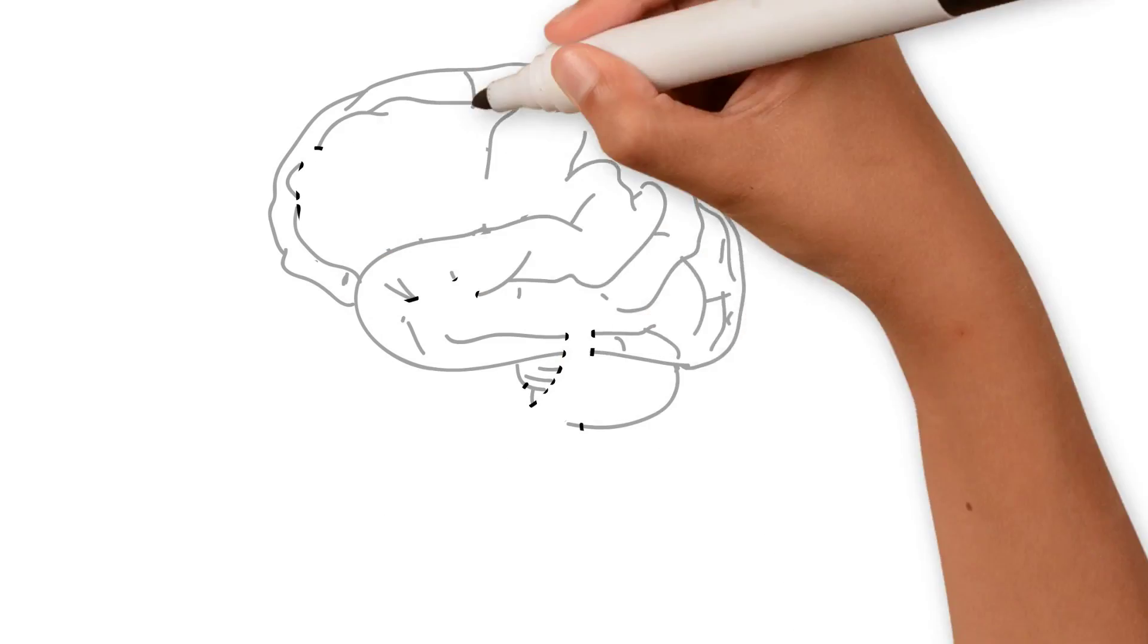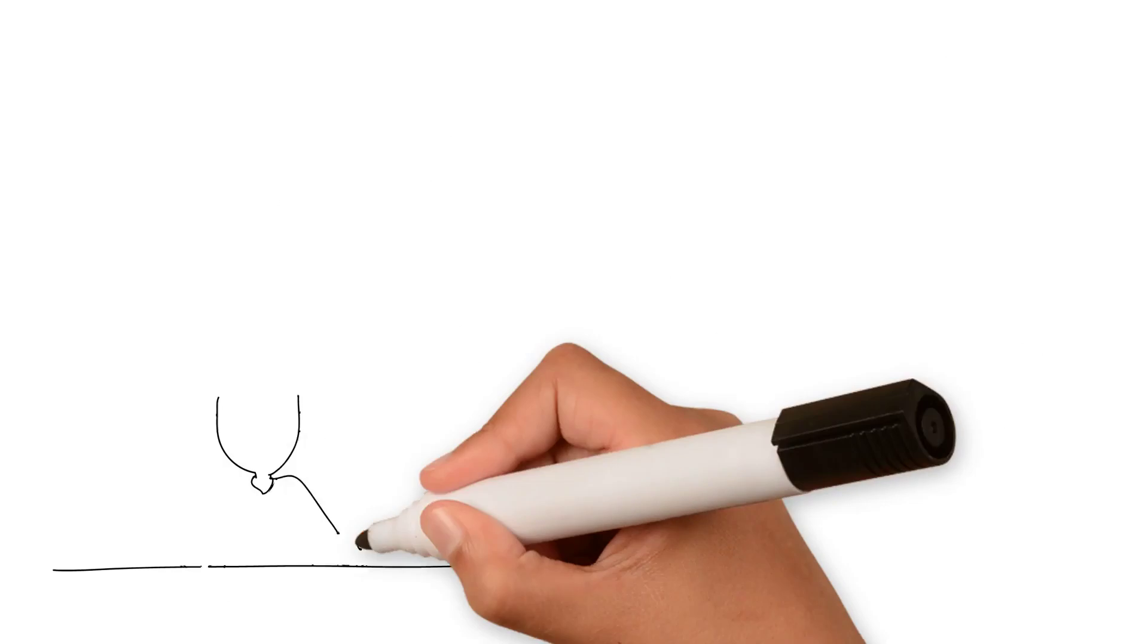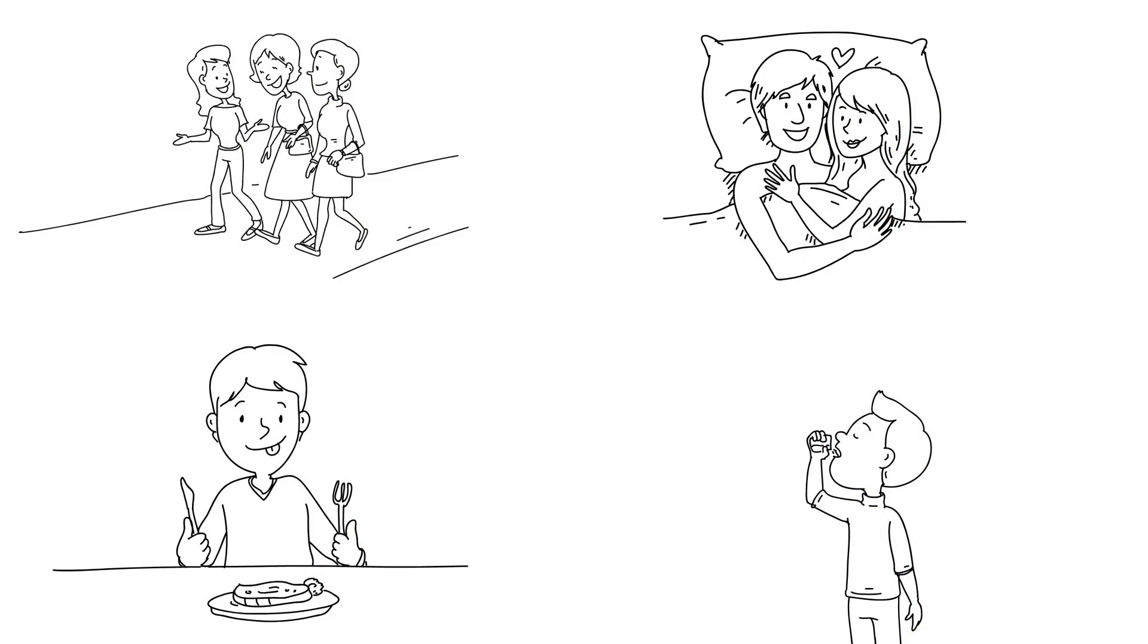Your brain uses those dopamine bursts to train itself. That's why actions that promote your survival—eating, drinking water, making friends, mating, etc.—feel good.